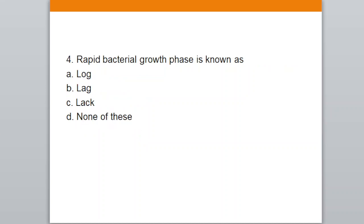Next question: rapid bacterial growth phase is known as — A. log phase, B. lag phase, C. lag phase, D. none of the above. Your correct answer is option A — log phase, also known as the exponential phase.